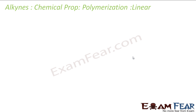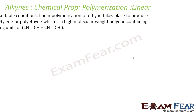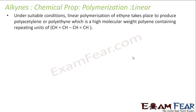There are two kinds of polymerization: linear and cyclic. Let's talk about linear first. Under suitable conditions, a linear polymerization of ethyne takes place to produce polyacetylene or polyethyne, which has a higher molecular weight with continuously repeating units.